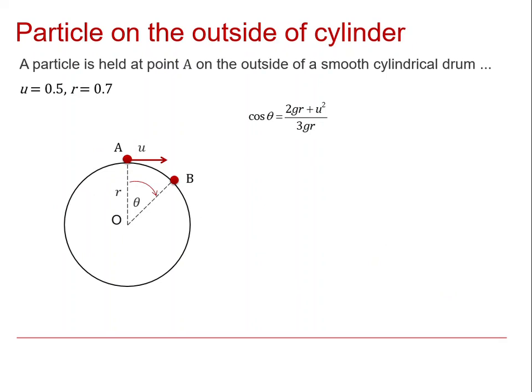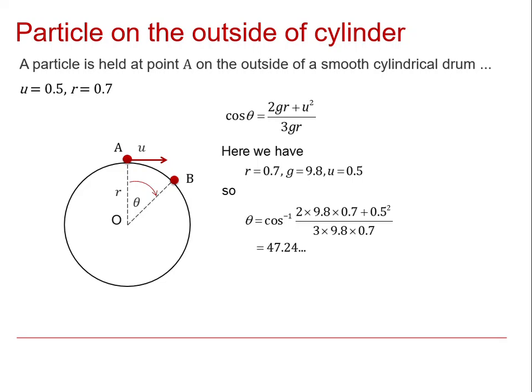The u is 0.5 and the r is 0.7 from the original question. There's the cos θ term we've just derived. So now we substitute the numbers in. This is a bit tedious, but it's no more than that. We've got r is 0.7, u is 0.5, and g is 9.8. The angle is the inverse cosine of this expression with these numbers in it. That gives us an angle of 47.24 degrees. To answer the question, we can say it loses contact when θ equals 47.2 degrees.